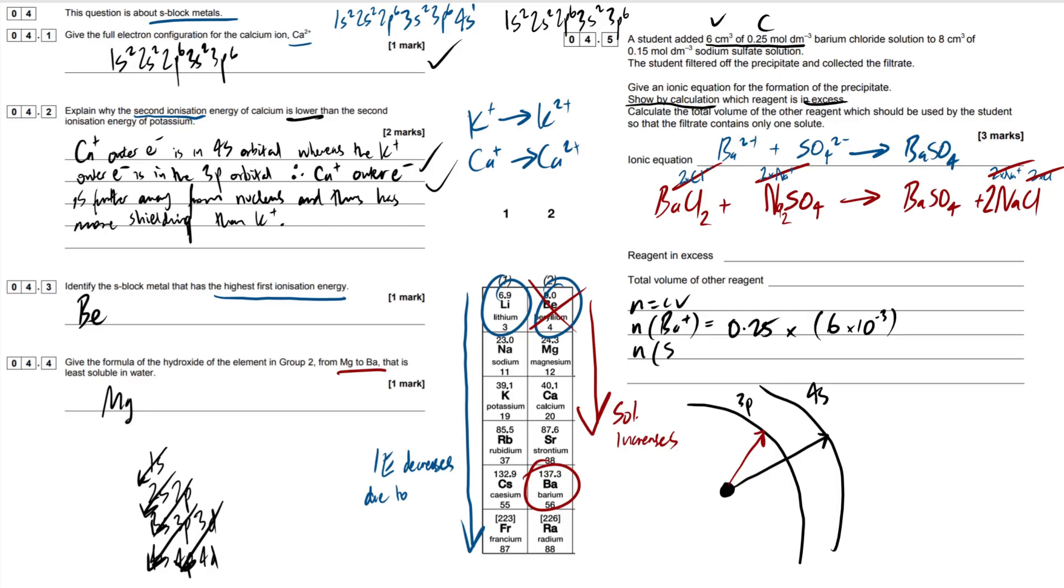What we can do then is the moles of barium ions. Now there's one mole of barium ions within one mole of barium chloride. So that's just going to be our concentration. So 0.25 multiplied by our volume, which is six centimeters cubed. Now this is moles per decimeter cubed. So we're simply going to have to convert centimeters into decimeters. So all you have to do is divide by a thousand, which is the same thing as times 10 to the minus three. Next up are moles of our sulfate. One mole of sulfate ions per one mole of sodium sulfate. So that's going to be 0.15 times by eight. We've got eight centimeters cubed. So we're going to have to times that by 10 to the minus three to get it into decimeters cubed. When we plug these into our calculator, it should give us 1.5 times 10 to minus three mole and 1.2 times 10 to minus three mole.